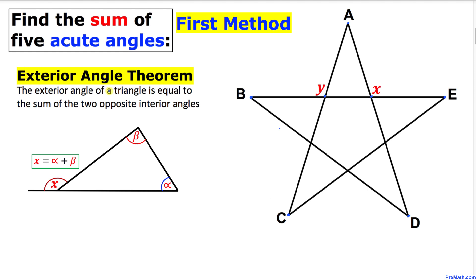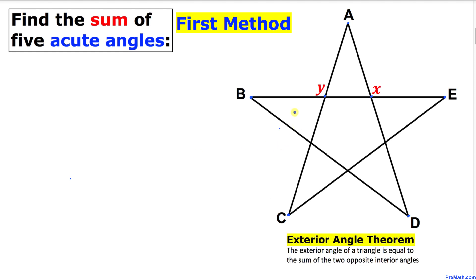The exterior angle theorem states that the exterior angle of a triangle is equal to the sum of the two opposite interior angles. As you can see in this shape, if we have two angles alpha and beta, then this exterior angle is always going to be equal to the sum of these two opposite interior angles. Just keep this concept in mind — we will be using it in this proof.